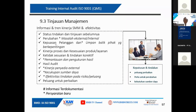Kemudian kepuasan pelanggan dan umpan balik pihak yang berkepentingan. Jadi survei kepuasan pelanggan, dan mungkin kita ada penilaian supplier. Kemudian kinerja proses dan kesesuaian produk atau layanan. Jadi proses yang kita amati — kesesuaian produk atau layanan, artinya produk itu berapa persen kinerjanya? Misalnya produk bisa mencapai 80 persen, artinya 20 persen loss. Itu masih kurang bagus.